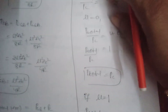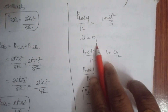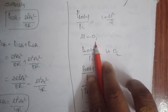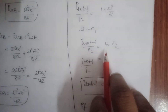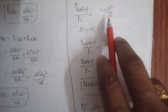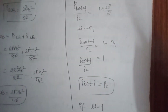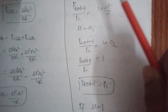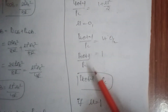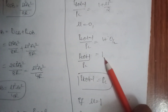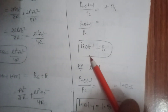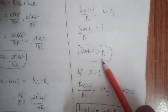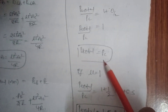Consider the case μ = 0. Substituting into P_total/PC = 1 + μ²/2 gives P_total/PC = 1, meaning P_total = PC. This means only the carrier signal component is present, which is not a useful case.